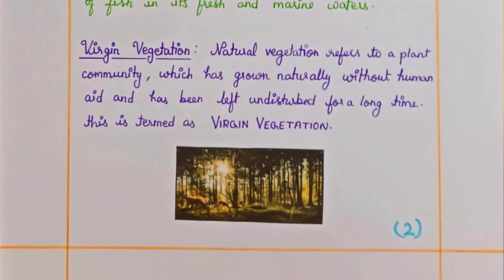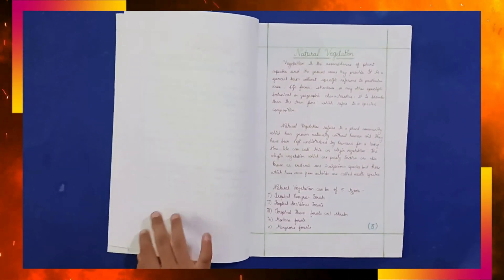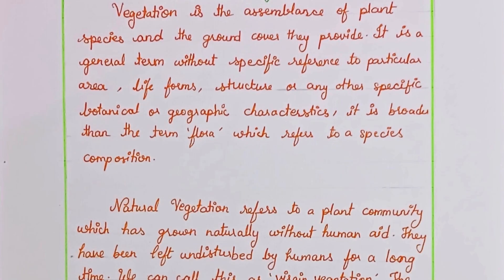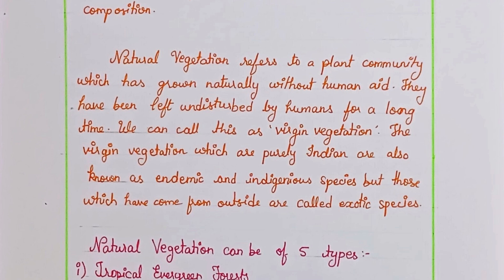Virgin Vegetation: Natural Vegetation refers to a plant community which has grown naturally without human aid and has been left undisturbed for a long time — this is termed as Virgin Vegetation. Vegetation is the assemblage of plant species and the ground cover they provide. It is a general term without specific reference to particular area, life forms, structure, or any other specific botanical or geographic characteristics. It is broader than the term flora, which refers to species composition.